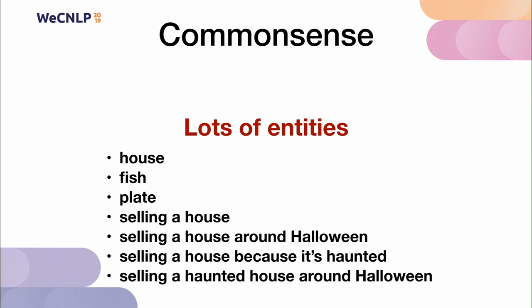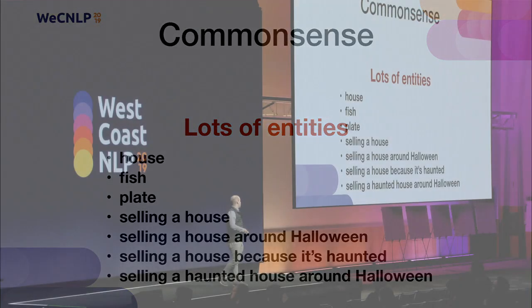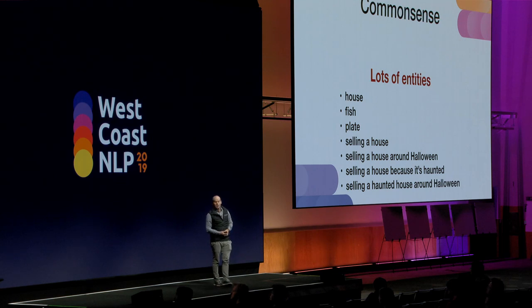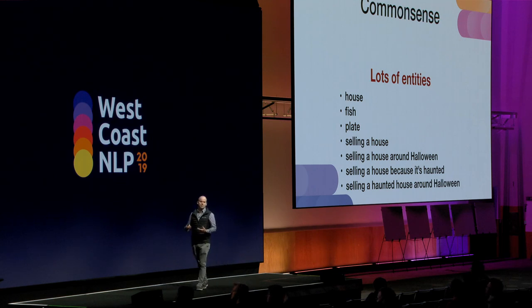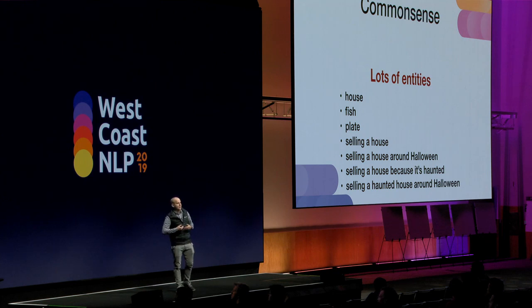Common sense knowledge graphs would need to understand diverse concepts such as a house, a fish, a plate — but even more complicated concepts such as events like selling a house, or selling a house around Halloween, or selling a house because it's haunted. Each of these have different common sense implications that an intelligent agent would need to be aware of in order to understand what's going on.